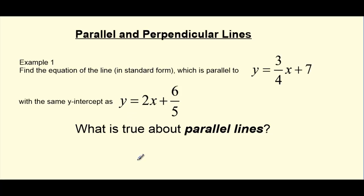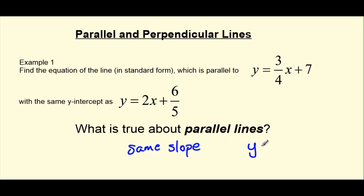First, let's start by understanding what we know is true about parallel lines. Well, we know that parallel lines never touch each other. They have the same steepness, or in math terms, we say that they have the same slope. This is useful for us because when we write equations of lines, especially in the form y equals mx plus b, we know that their slope is represented by the m value. Lines that are parallel will have the same m value.